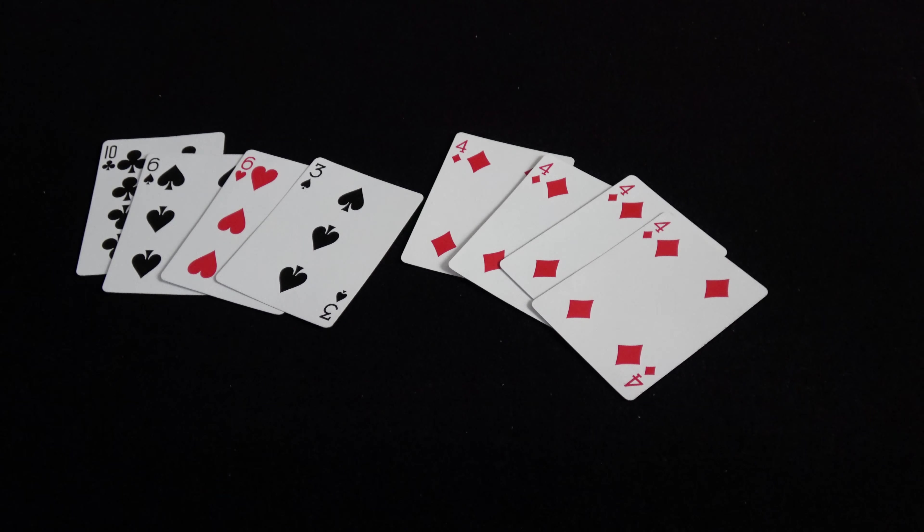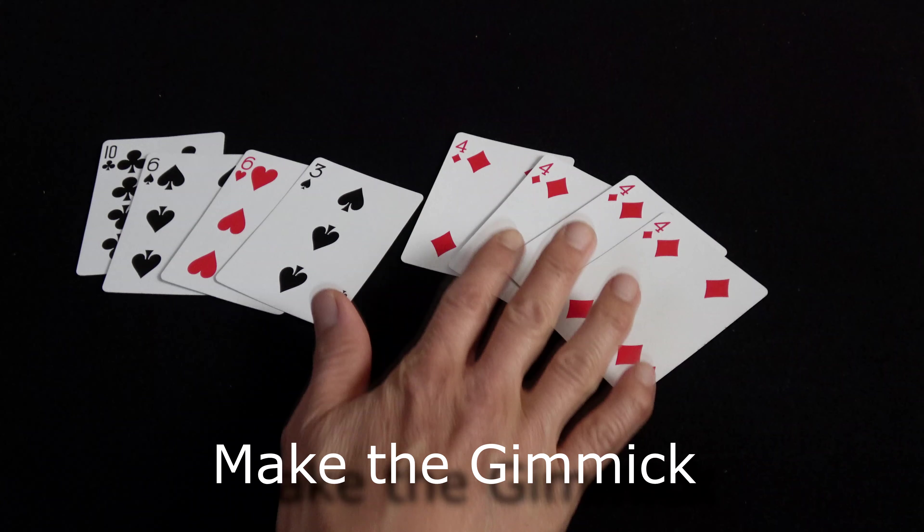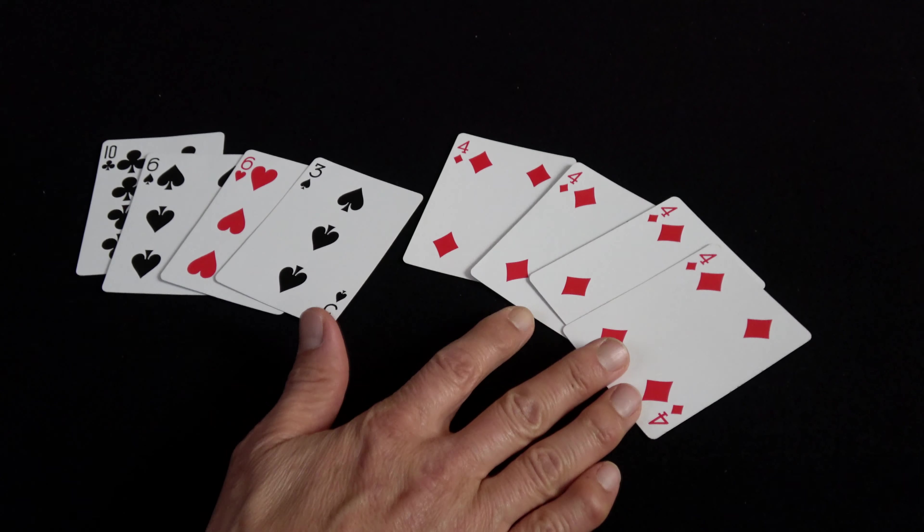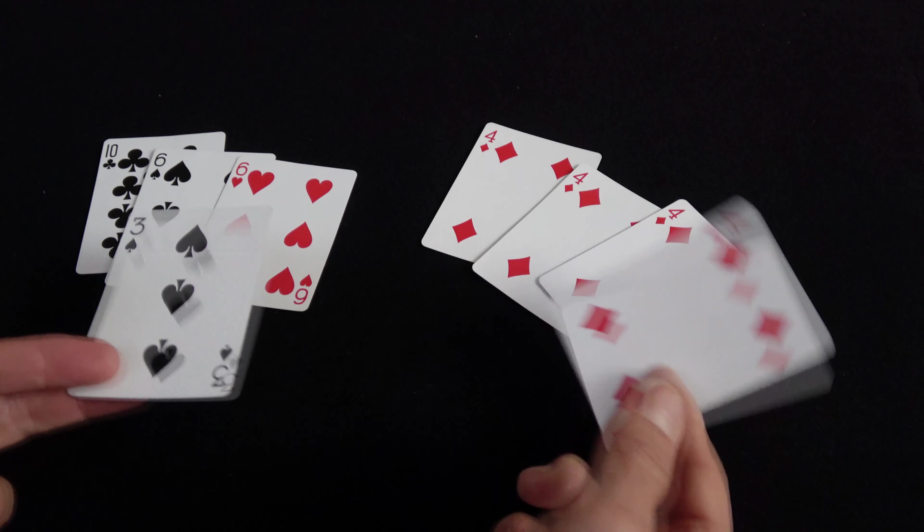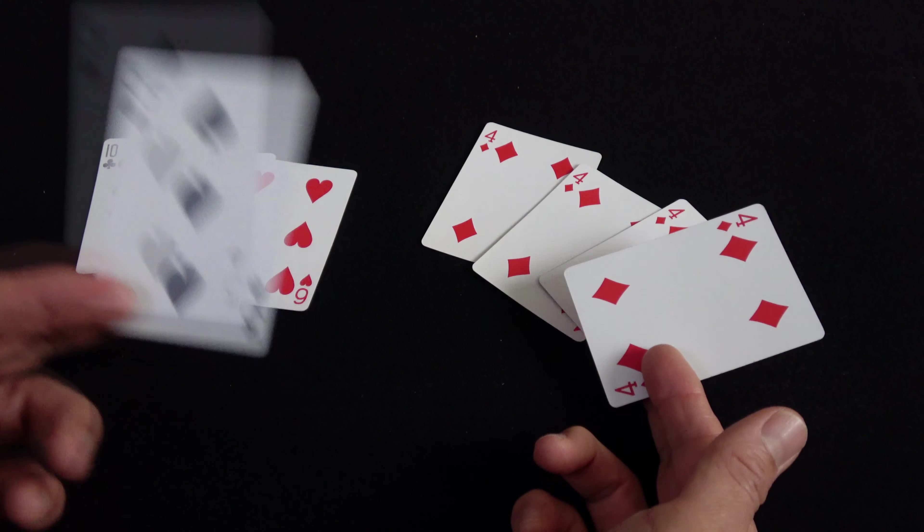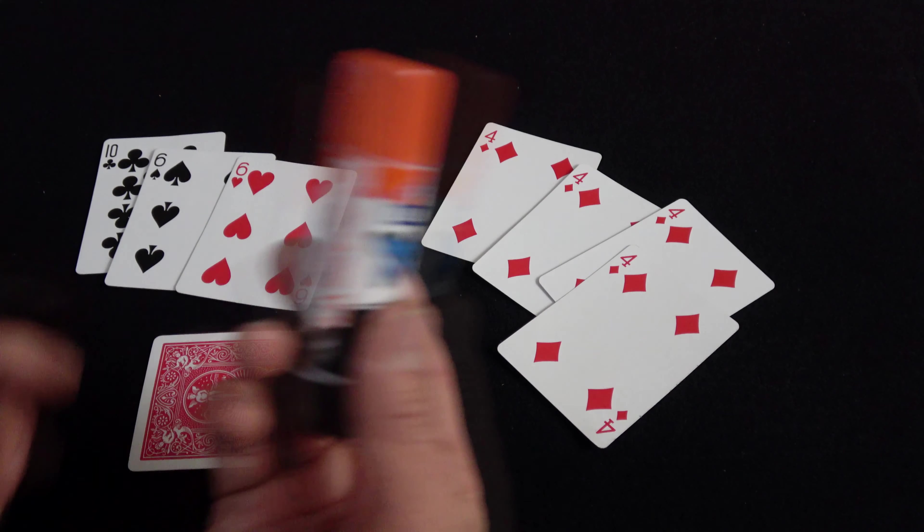For this trick, you're going to need to make a gimmicked set of cards. What you'll need is four cards that are identical and four cards that are different. You're now going to glue one card from this set onto the back of this one in a special way. Get some glue.